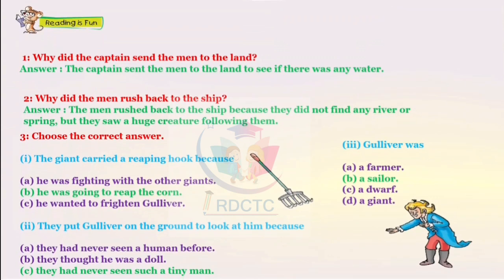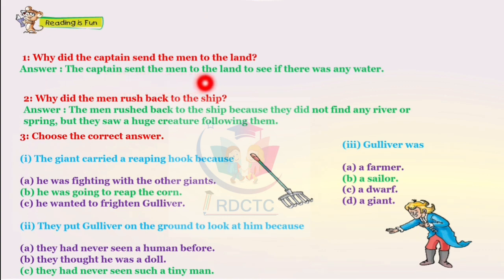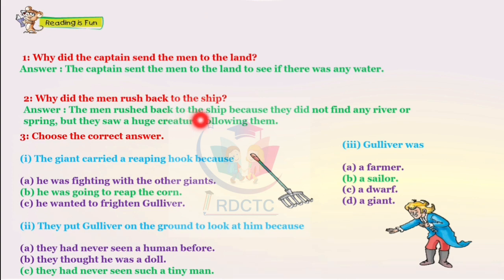Now we discuss the exercise questions. The first topic is 'Reading is Fun.' Why did the captain send the men to the land? The captain sent the men to the land to see if there was any water. Why did the men rush back to the ship? The men rushed back to the ship because they did not find any river or spring, but they saw a huge creature following them.